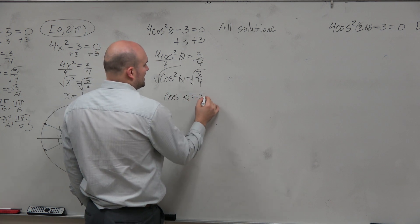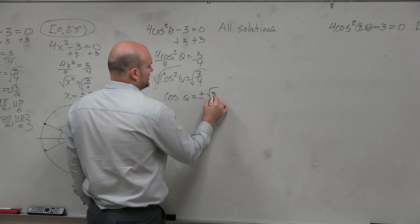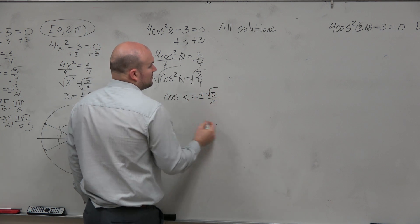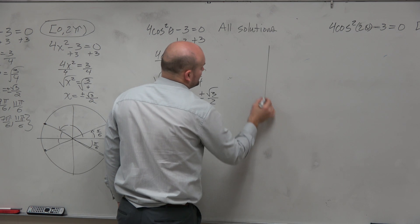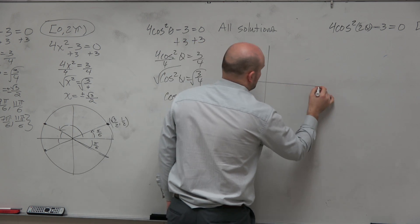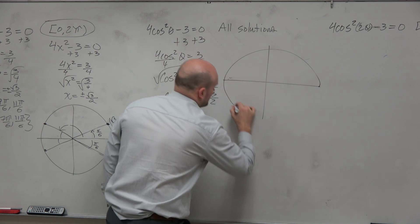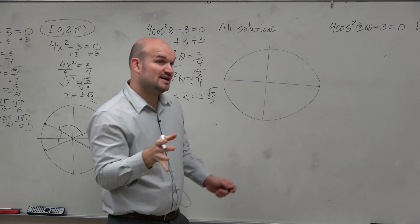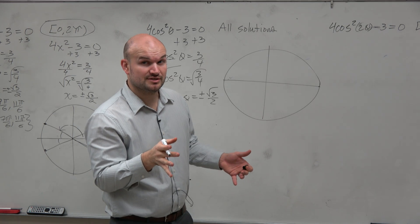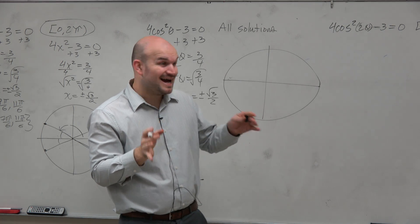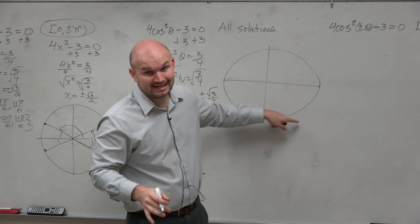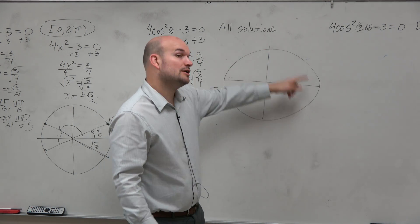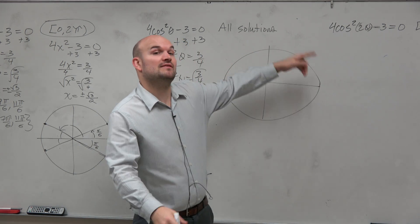Taking the square root, cosine of theta equals plus or minus the square root of 3 over 2. Now, when we go and look at the unit circle, here's 0 to 2π. But what they're saying is all the solutions, meaning I can keep on adding — I can keep on going around and around the circle.